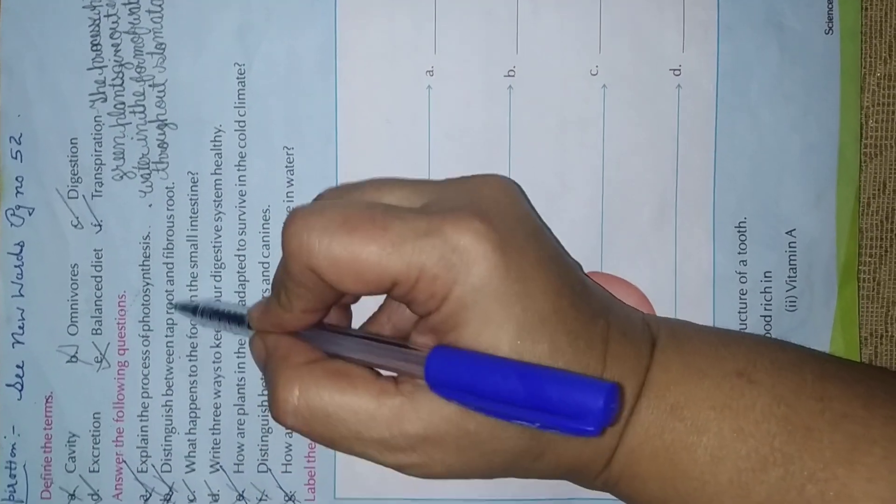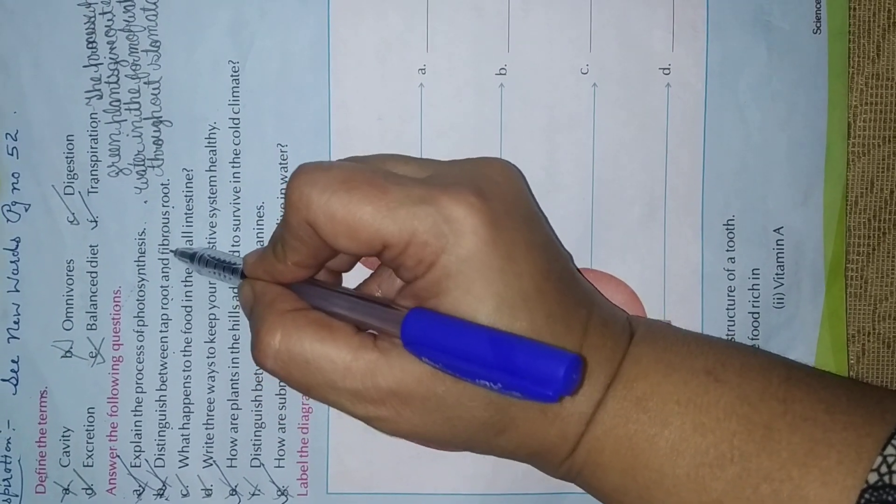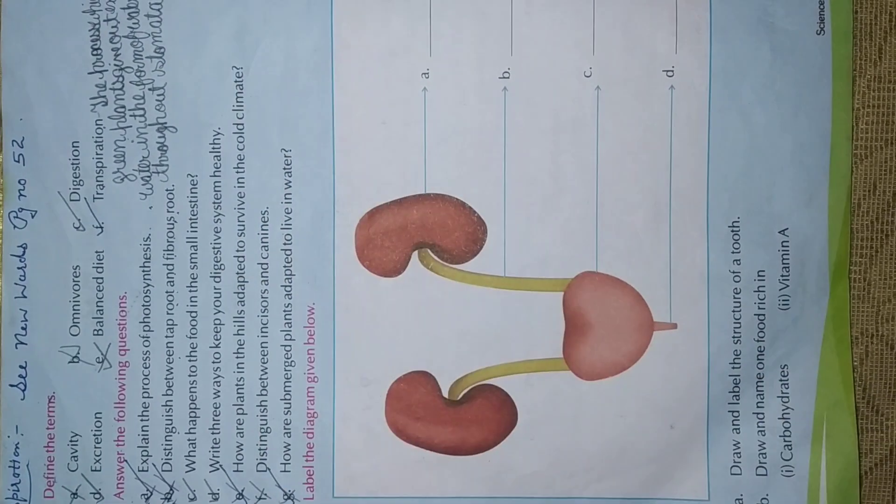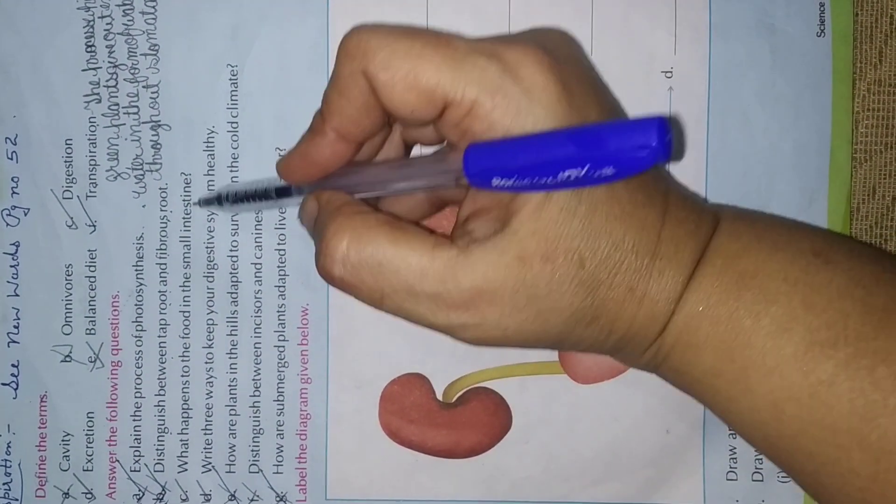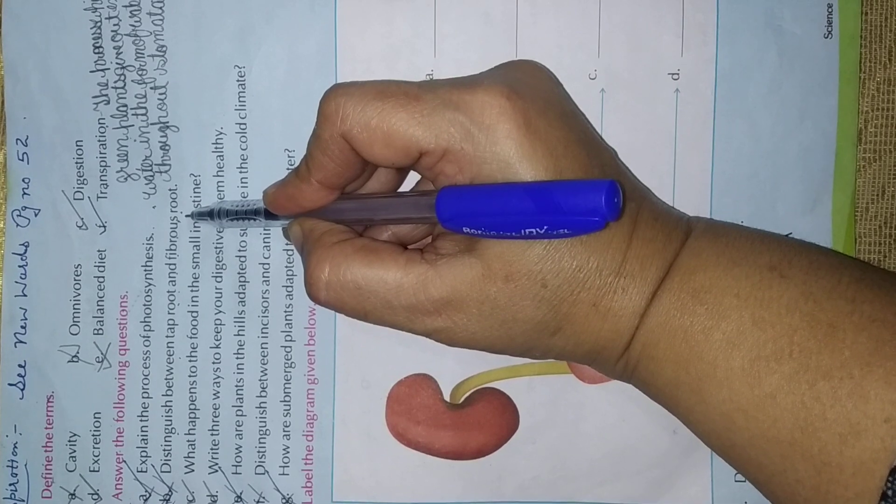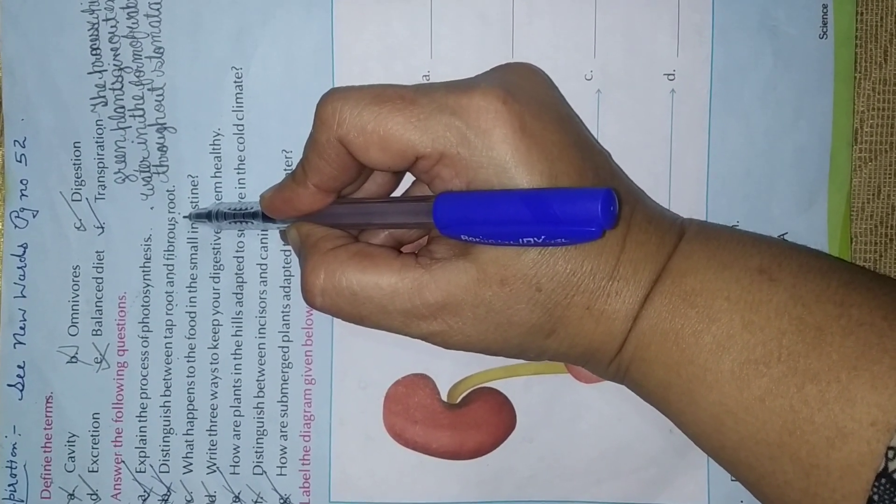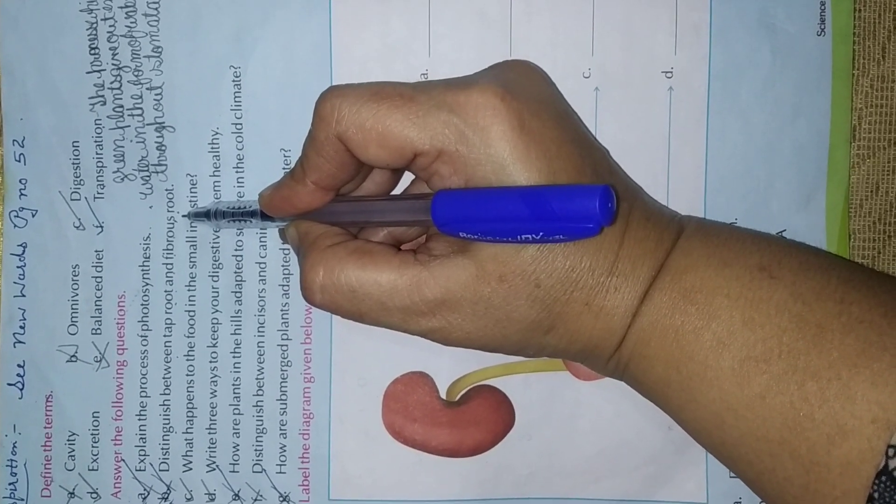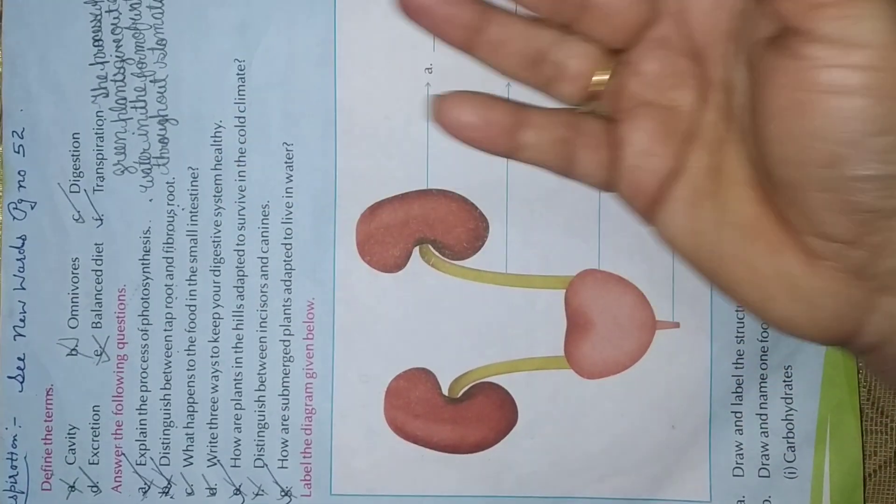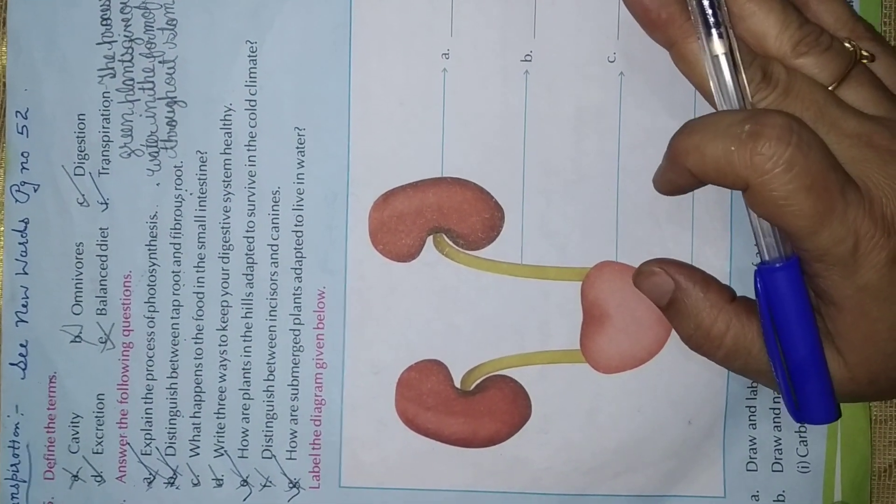B. Distinguish between tap root and fibrous root. You know what is the difference between tap root and fibrous root? Tap roots have only main root. And fibrous roots, they grow in bunch. Tap roots have branches. Fibrous roots grow in cluster. Tap roots grow deeply. Fibrous roots grow near outer layer of the soil. You understood the tap roots and fibrous root?